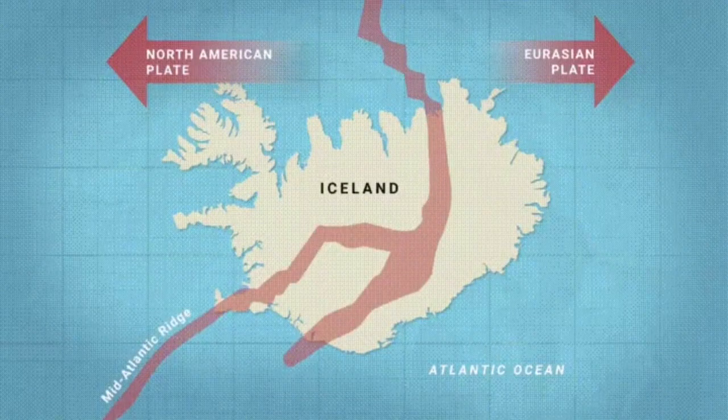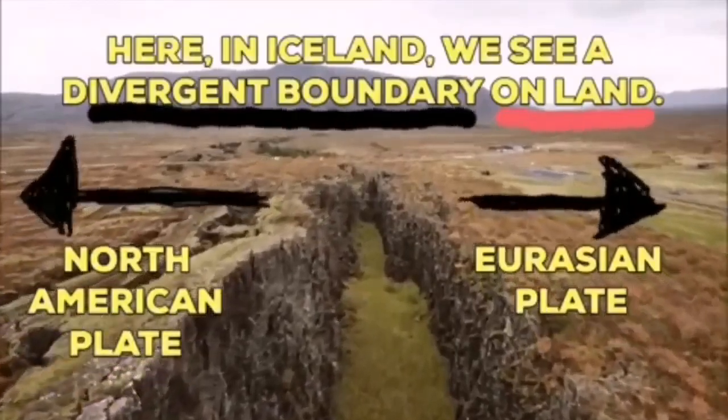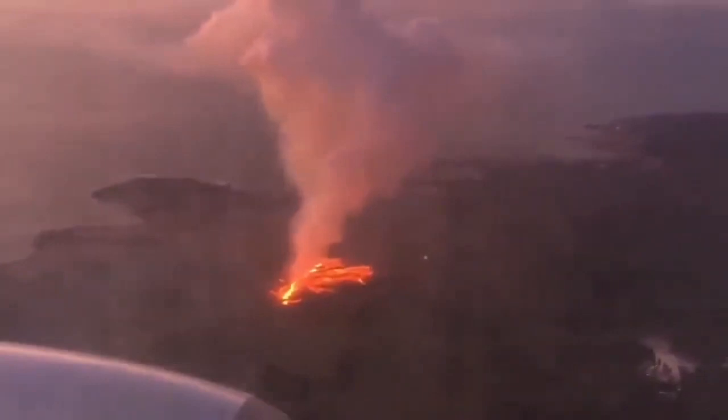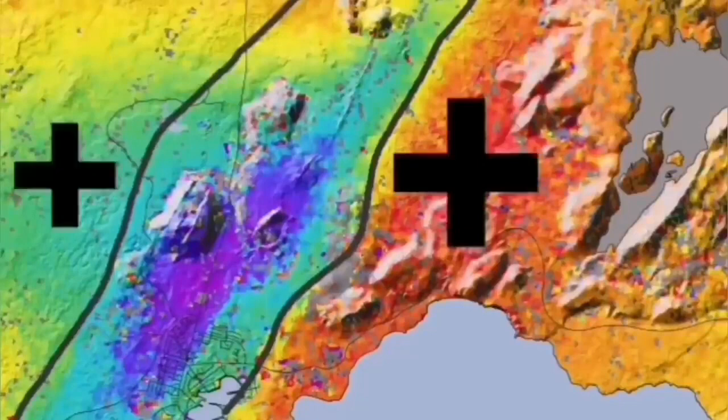Such a thing happens in Iceland, on the land, we can see it: Eurasian plate and North American plate. Through these gravels, this is the hollow that you see in the middle, are separating. And through them, the magma forms and rises and creates lava.